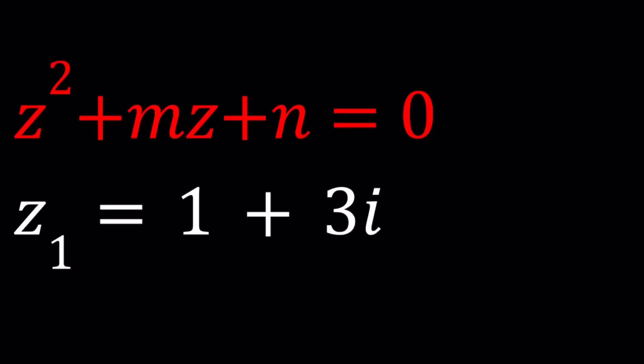Hello everyone, welcome to A Plus Pi. This channel is all about complex numbers, and in this video we're going to be solving a quadratic equation. We have z squared plus mz plus n, where m and n are real numbers, and we're given that z₁ is 1 plus 3i — one of the solutions. We're going to solve for m and n in multiple ways.